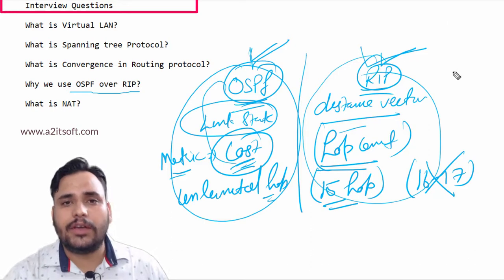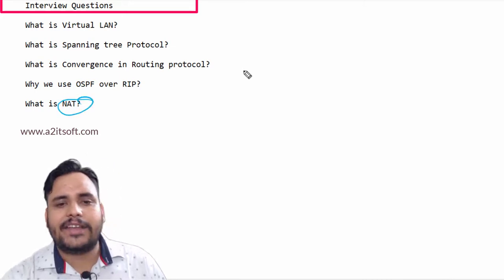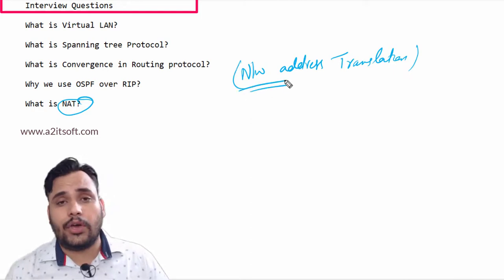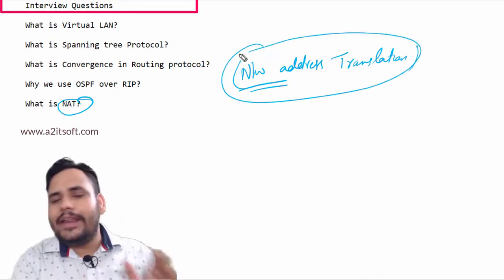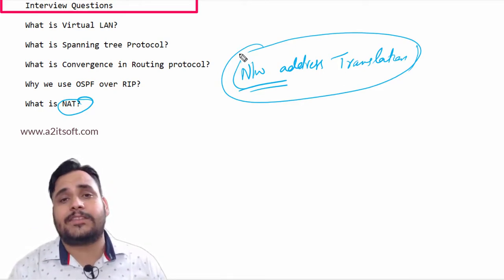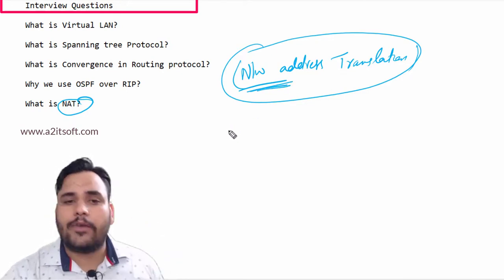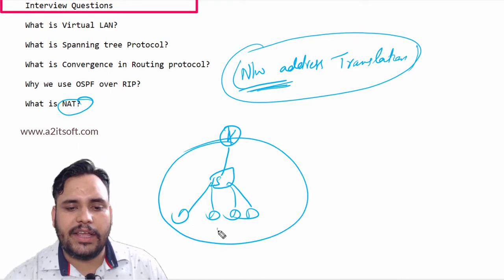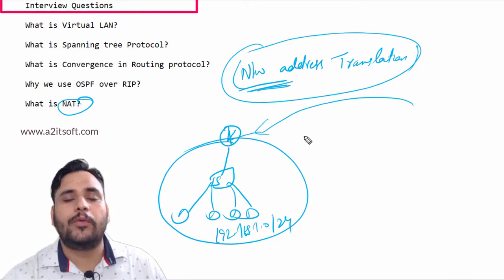Our last question is: What is NAT? NAT stands for Network Address Translation. It is a security concept like ACL, but in ACL we use blocking. In NAT, we use it to hide our internal IP address space from outsiders. For example, this router is connected with one network and this address range is 192.168.1.0/24.